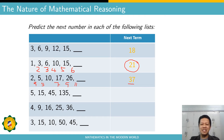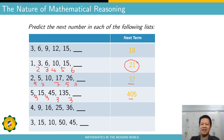How about the next sequence? The next term is 405. That is by multiplying by three. So you multiply three by five to get fifteen, multiply three by fifteen to get forty-five, multiply three by forty-five to get one hundred thirty-five, and multiplying three by 135 gives you 405.